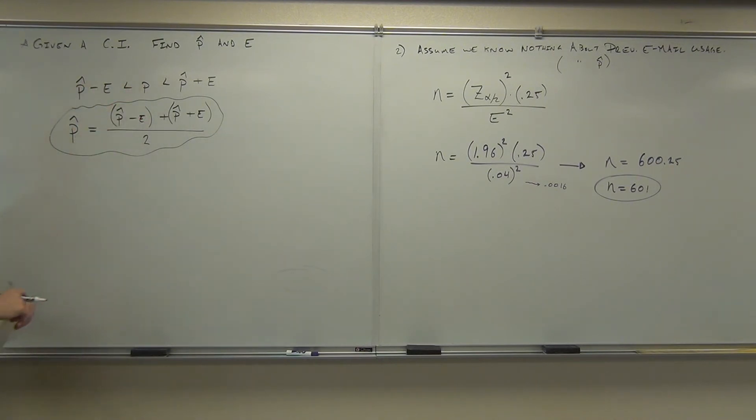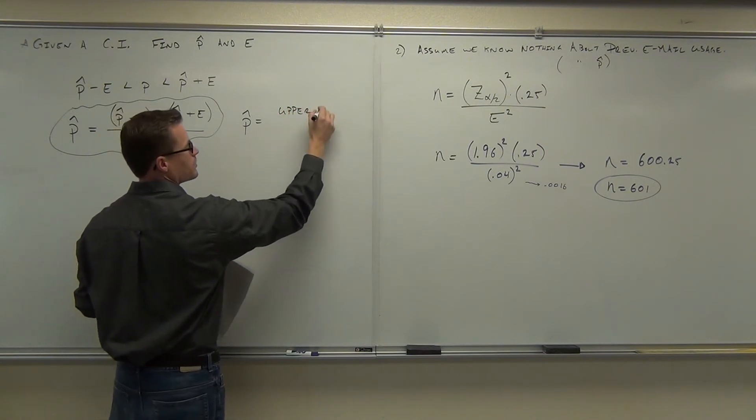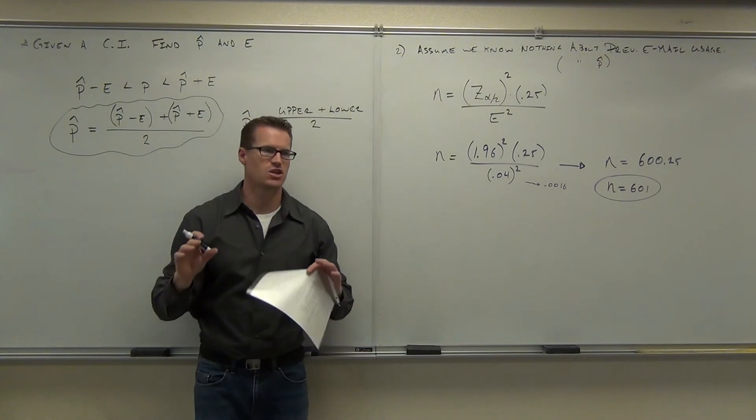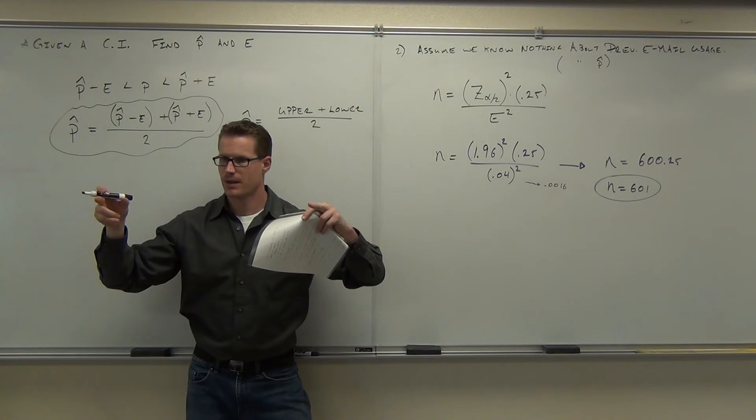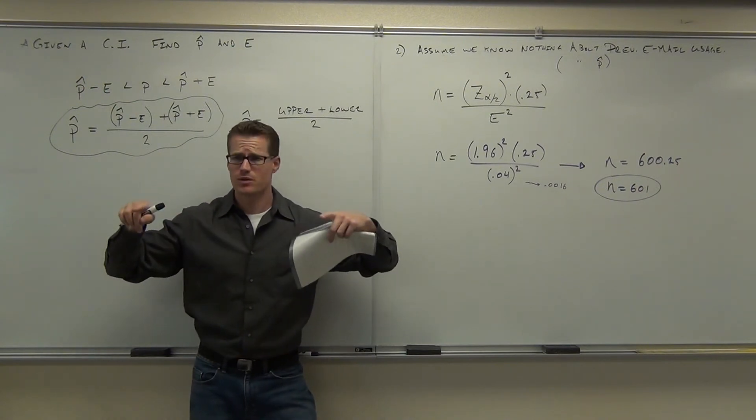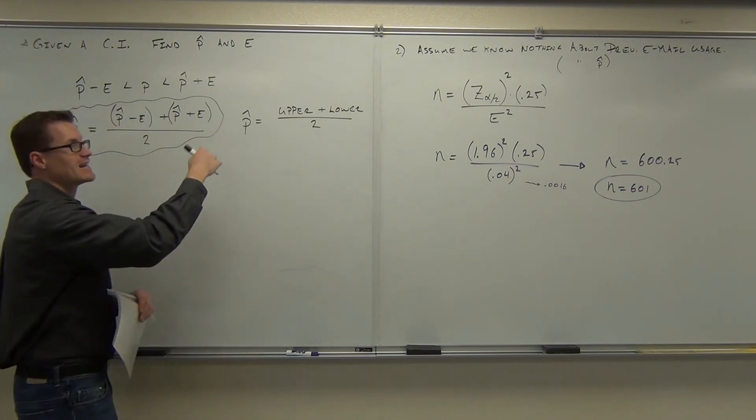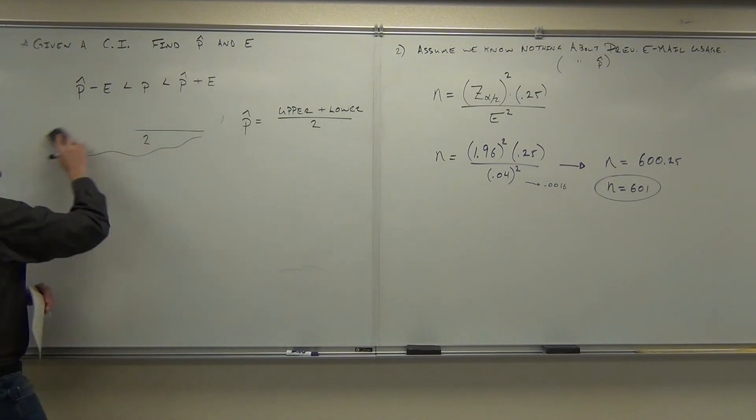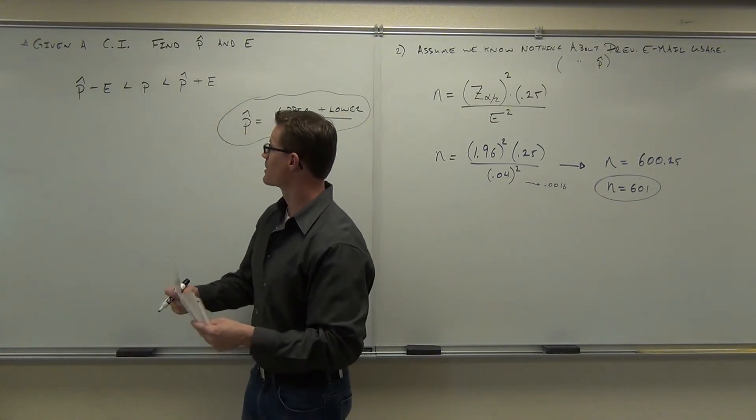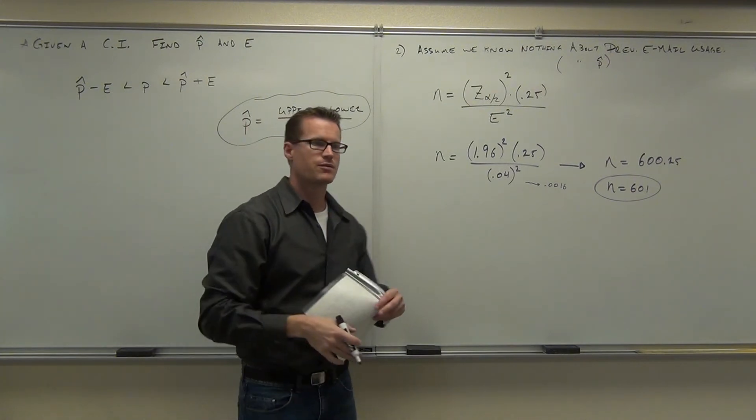This is how you find p-hat from a confidence interval. You take the upper plus the lower, or lower plus upper, and divide by two. Basically you just average those numbers. Now stop for a second and just think about why this works. If I give you a confidence interval, the number right in the middle is p-hat, right? Because you added to it and you subtracted from it the same exact number. So what you know for a fact is p-hat's right in the middle of those things. Average them, it's going to give you the thing right in the middle. That's how you find p-hat. You take the upper one plus the lower one, or lower one plus upper one, you divide by two. P-hat is the average of a confidence interval.